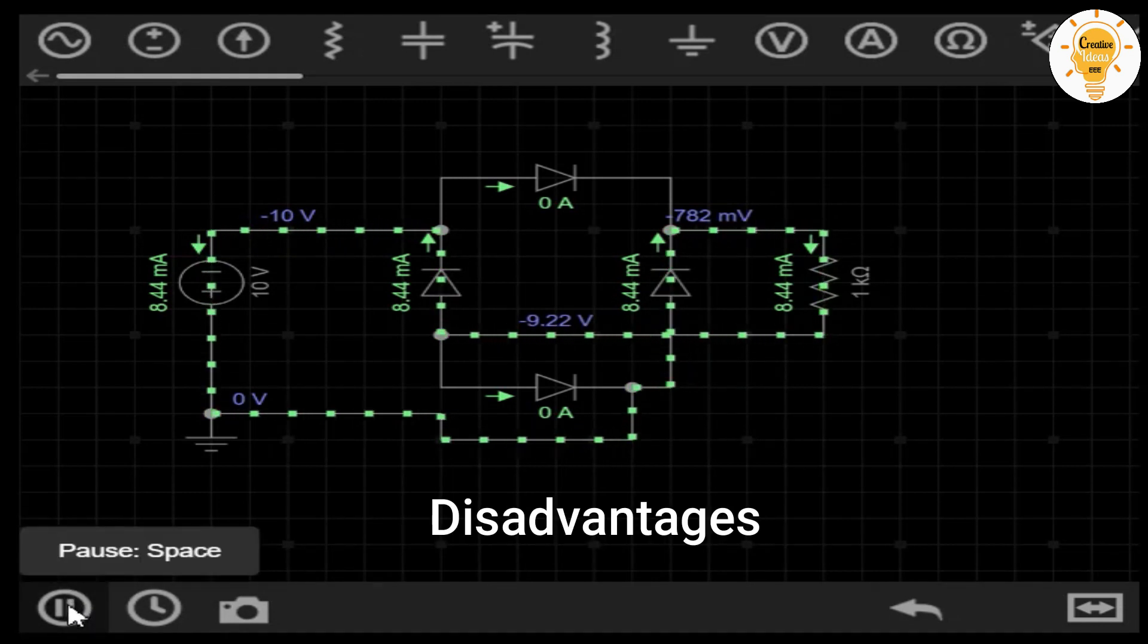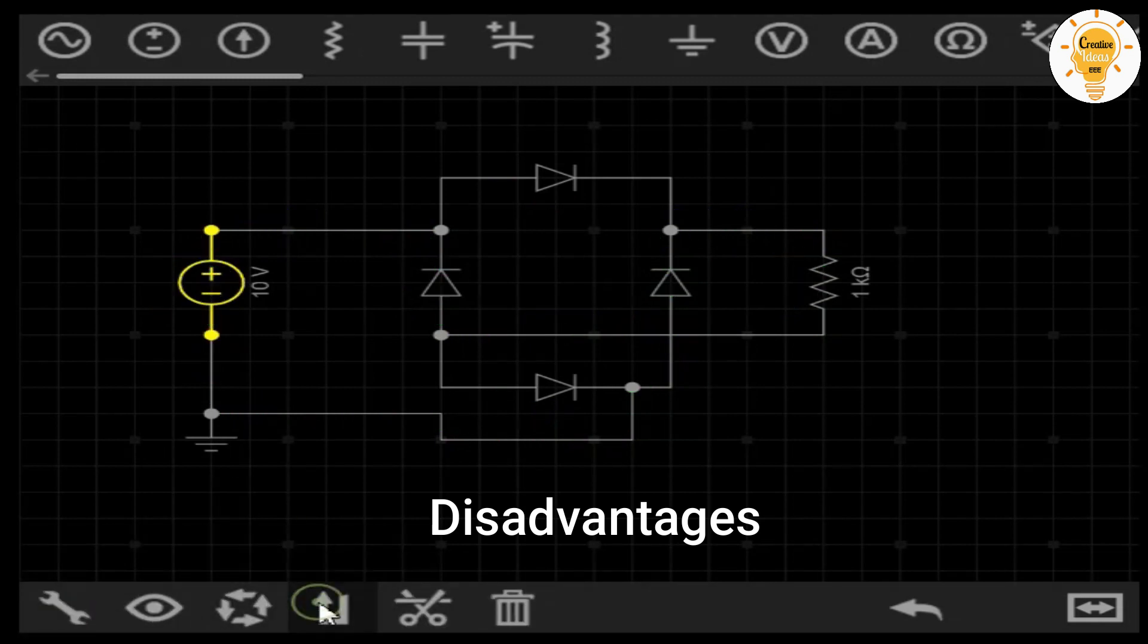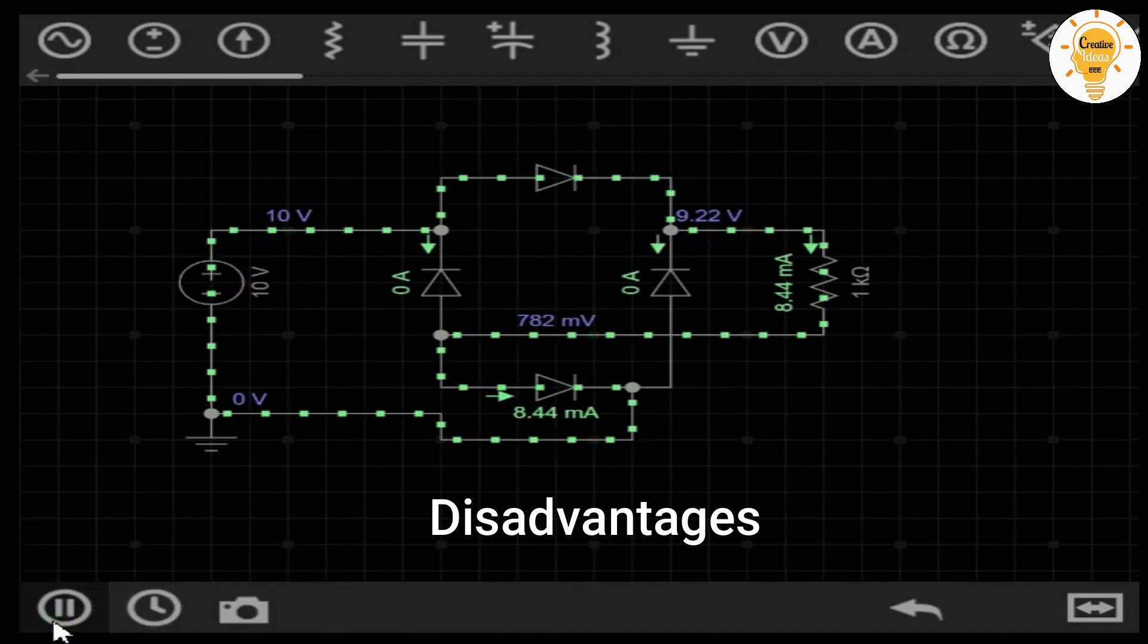Disadvantages: The voltage drop across the diodes is dissipated as heat. This means that the more current, the greater the dissipation.